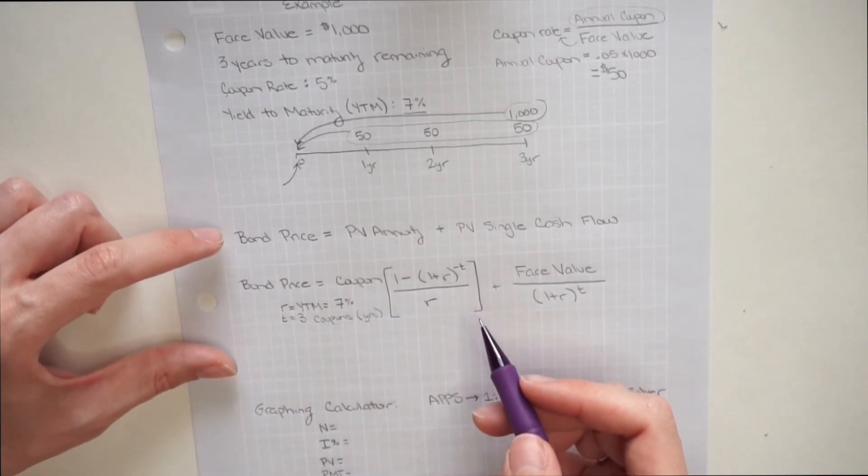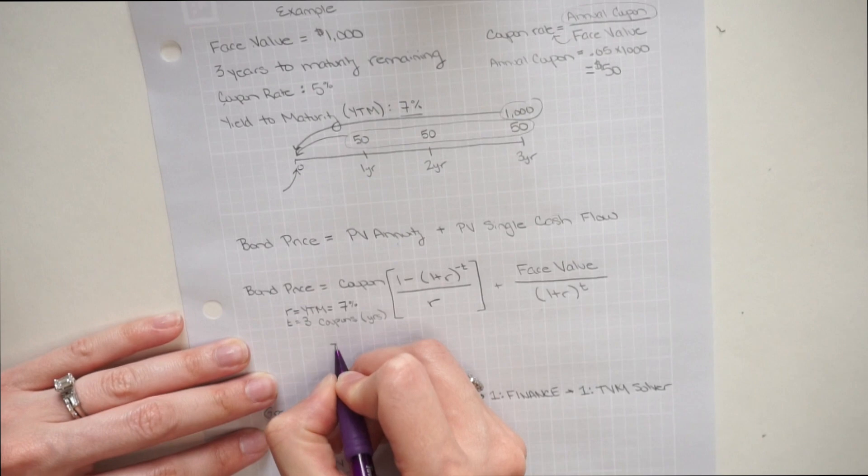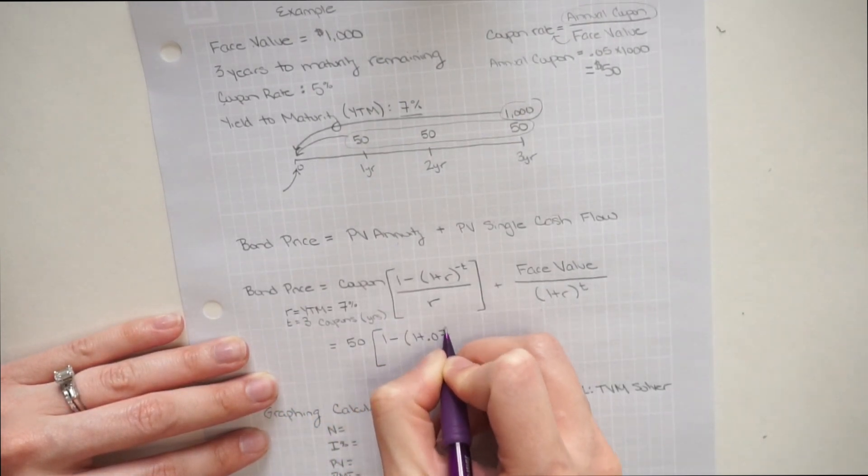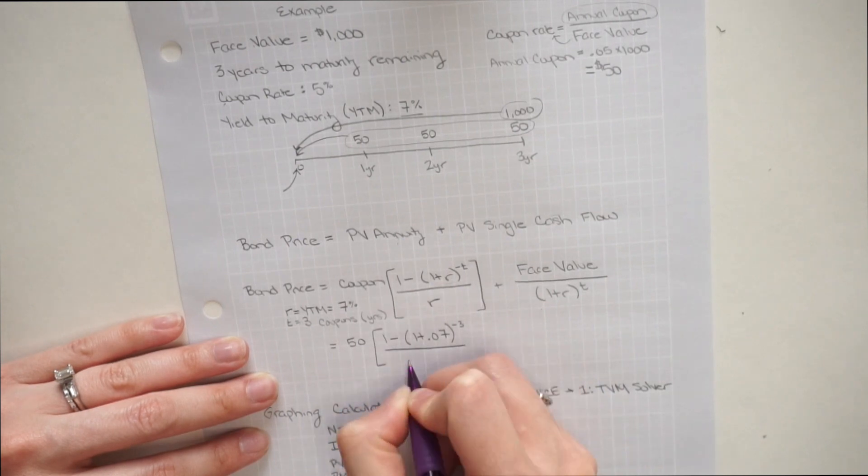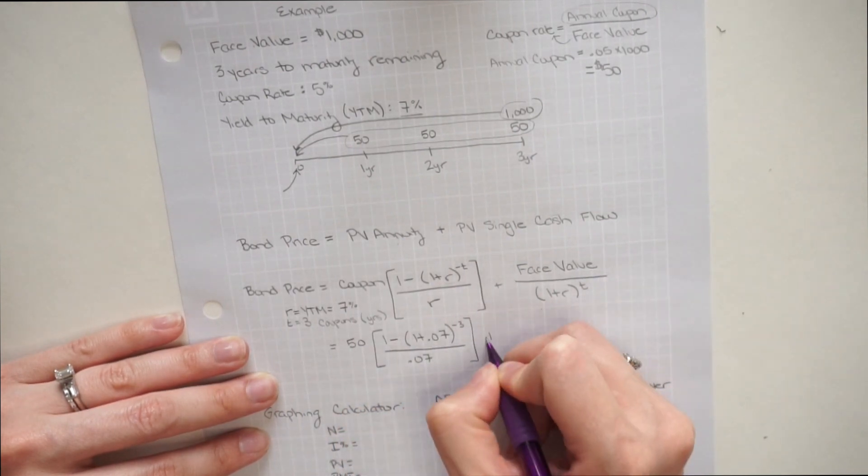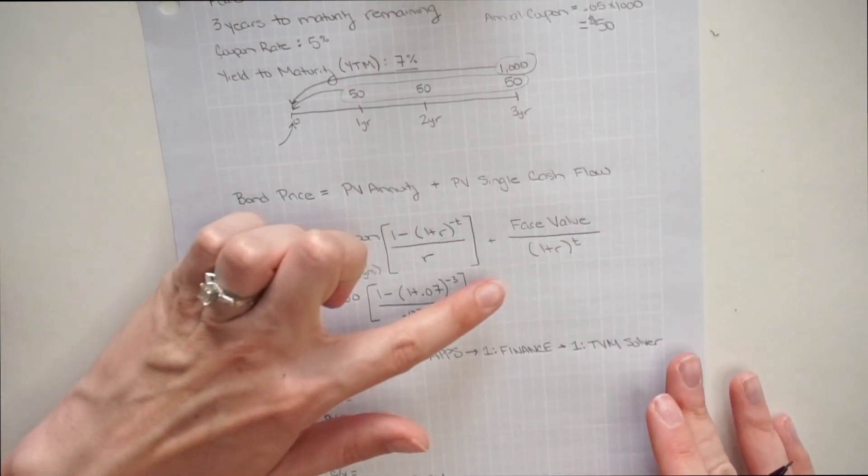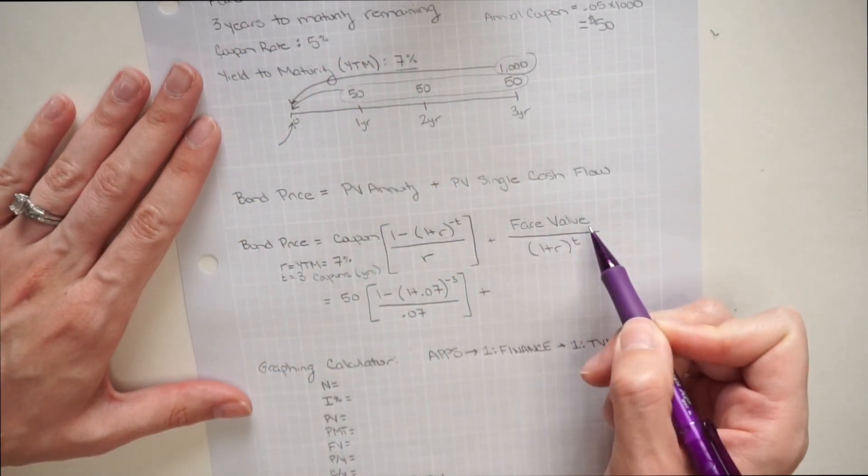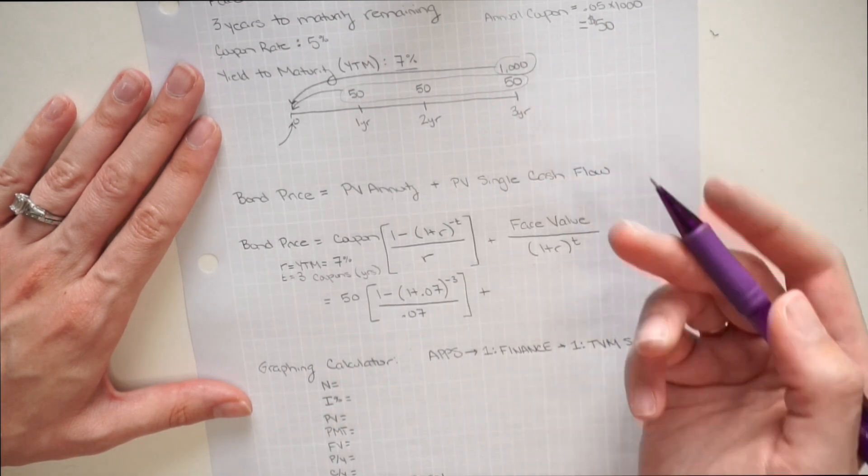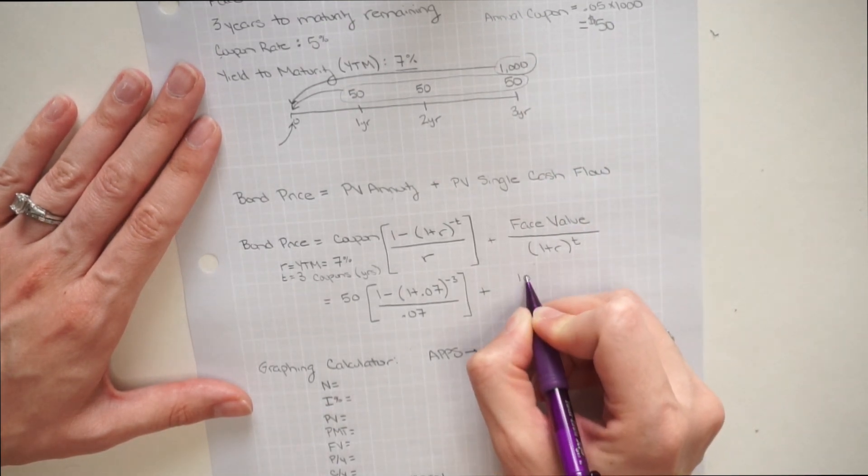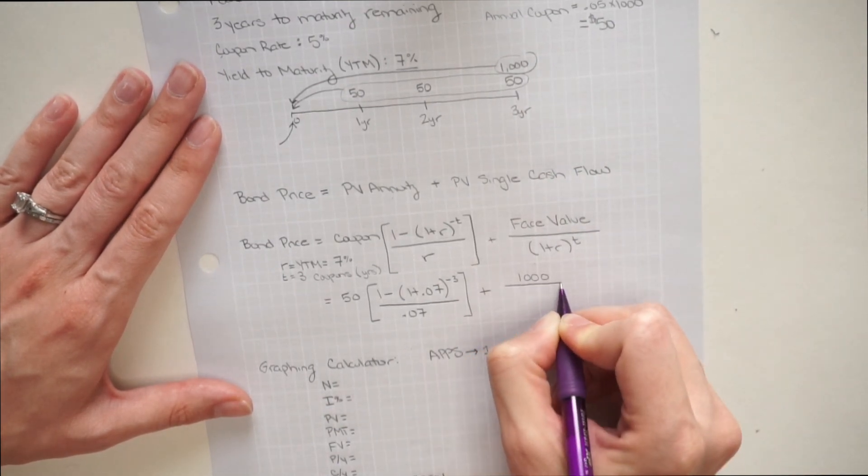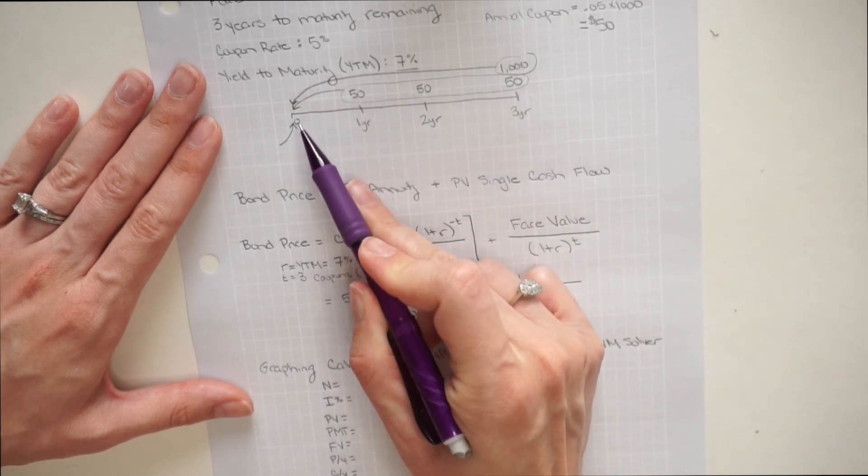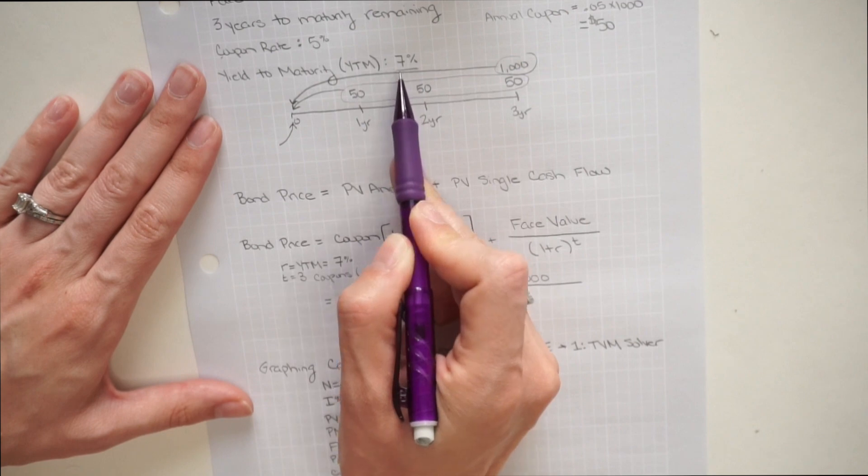So now I can fill out that first term. Next up, I'm going to do the single cash flow. So for the single cash flow, first I just have my face value or the future value. So it's going to be $1,000. And I'm discounting that back three years at my discount rate of 7%.